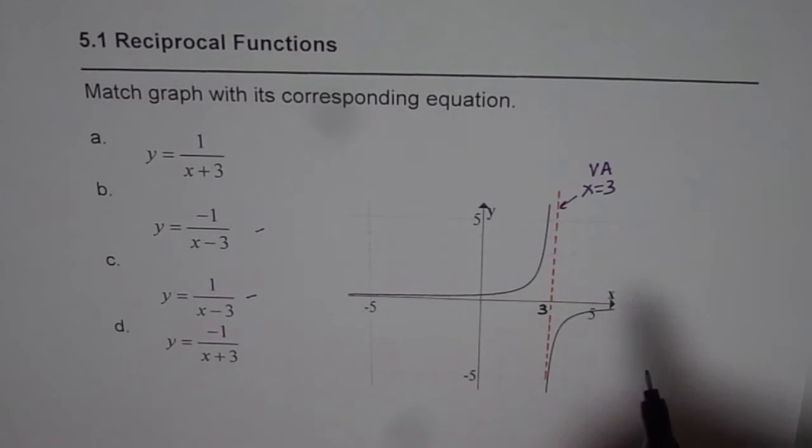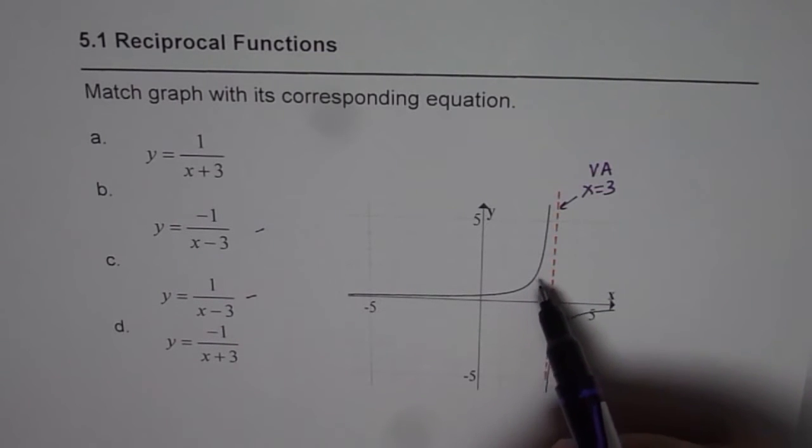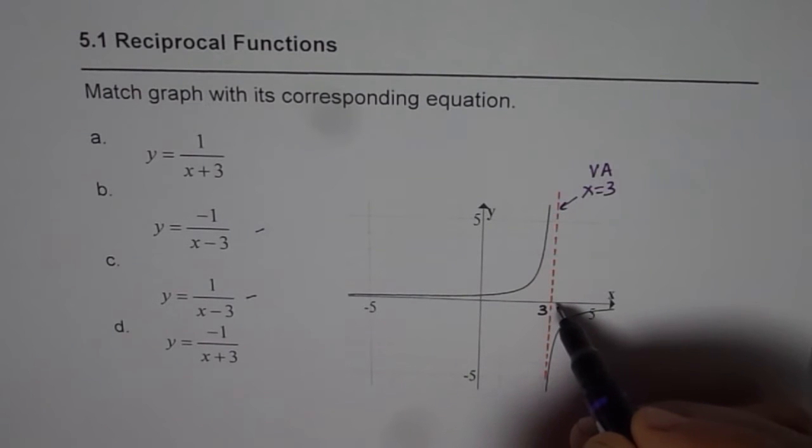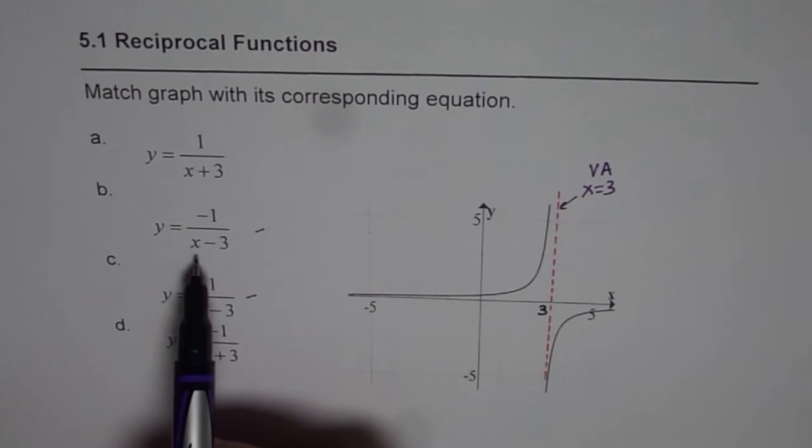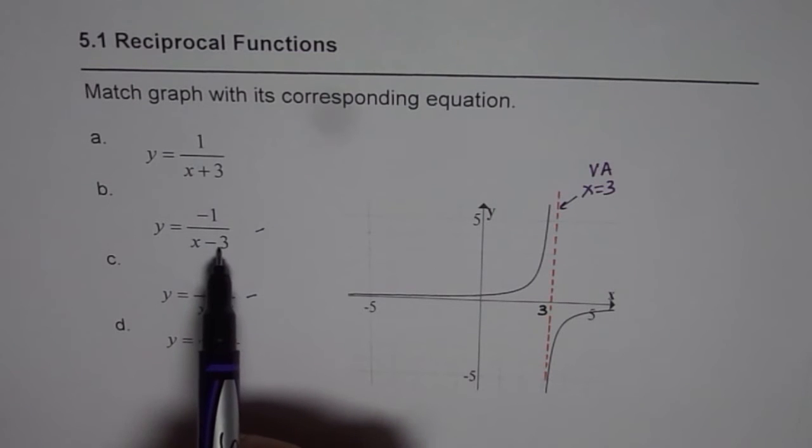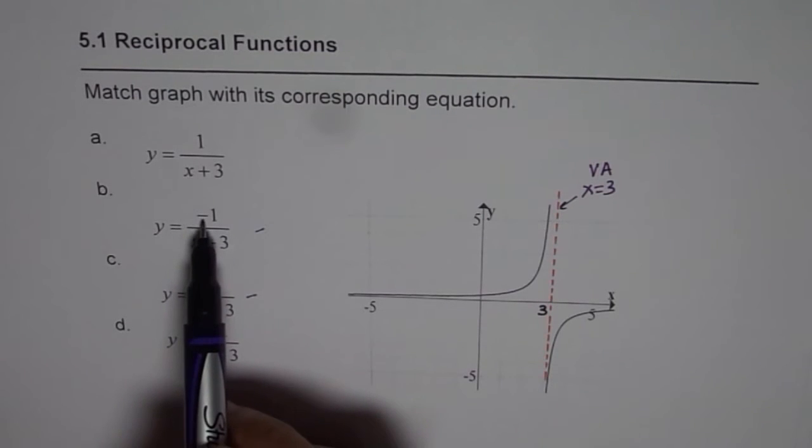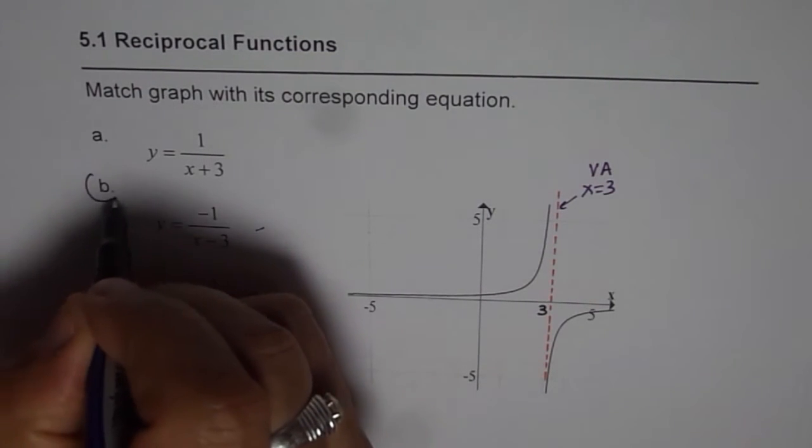Now we have to see the behavior near the asymptote. So if I substitute a value which is greater than 3, my function should have a negative value. That is what it is. So if I have a value which is greater than 3, let's say 3.1. So in this case 3.1 minus 3 is positive but the numerator is negative, so it is negative. So that is my option.